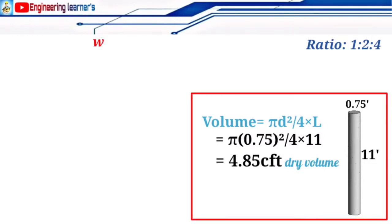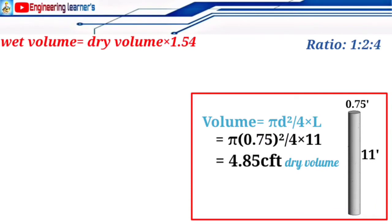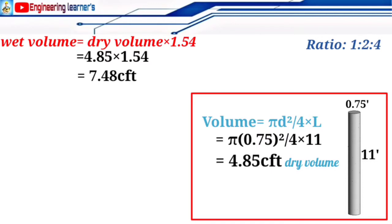To convert dry volume to wet volume, we multiply by a constant value of 1.54. Whenever we do estimation of any material, we find it in wet condition, which is why we convert dry volume to wet volume. Note that 1.54 is the constant for concrete; for mortar, the constant is 1.27. Since this is concrete, we multiply by 1.54: 4.85 × 1.54.